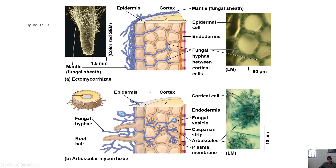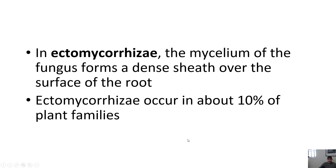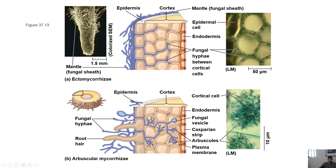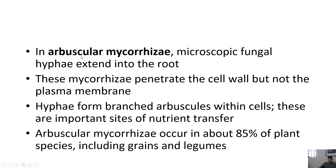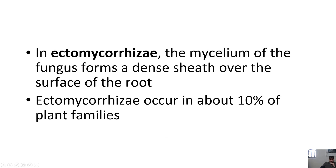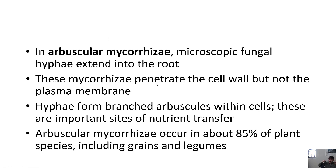So mycorrhizae allow plants to absorb things — it's a cool relationship. In ectomycorrhizae, the mycelium — which is the name of the fungal body — forms a sheet over the surface of the root, and parts of that mycelium, the fungal cells, go between the root cells. This is found in about 10% of plant families. But in arbuscular mycorrhizae, the hyphae — which are just the name for those individual noodle-like strands of fungi — actually go into the root cells themselves. Mycelium is all of the fungus, and hyphae are these individual strands. Arbuscular mycorrhizae are found in 85% of plant species, and they allow plants to get enough material from the soil to survive.